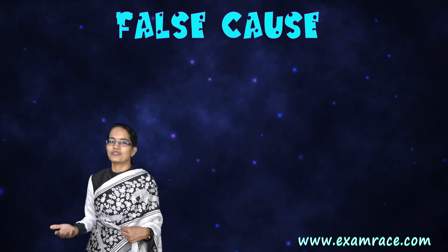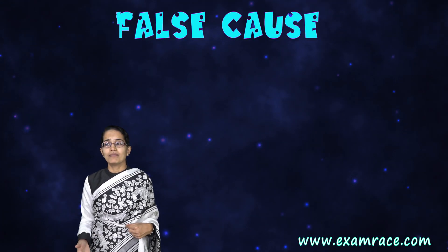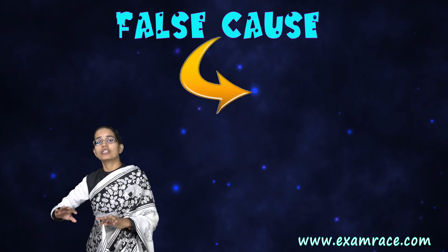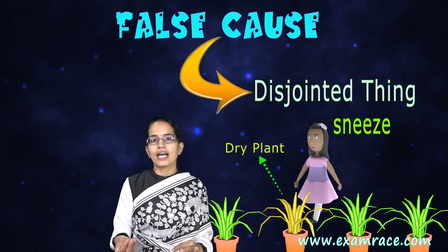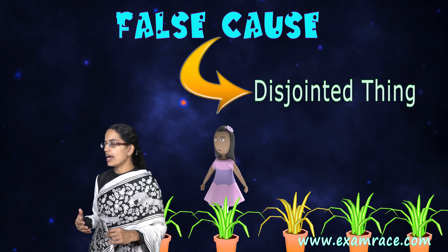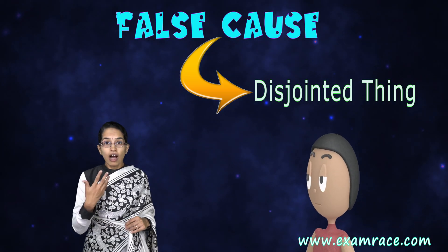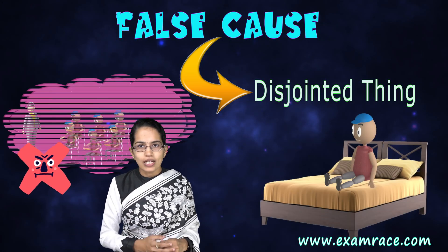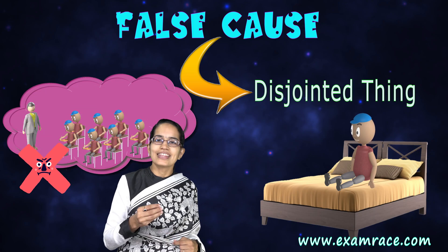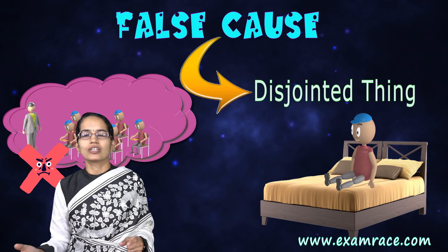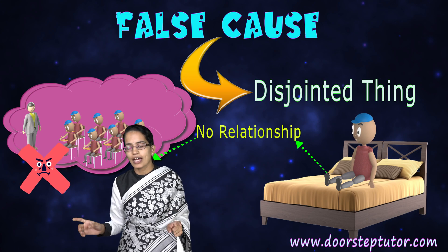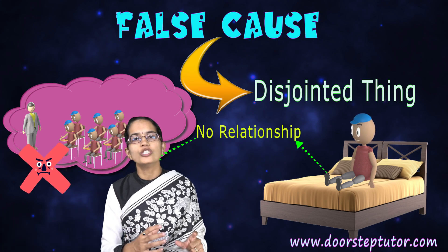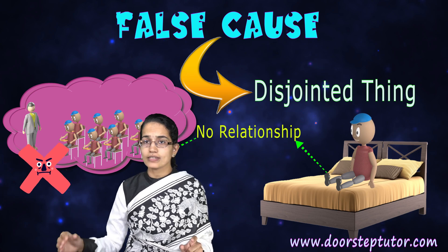The next is a false cause. A false cause is very simple — you can associate two disjointed things, and that's what a false cause is. Simply put, I can say because I coughed here, you were not able to clear the exam — that's a false cause. There is no relation between the two, but you are trying to create a false cause between them.